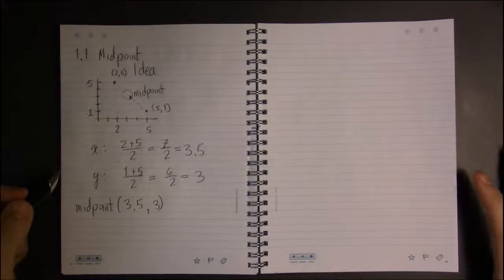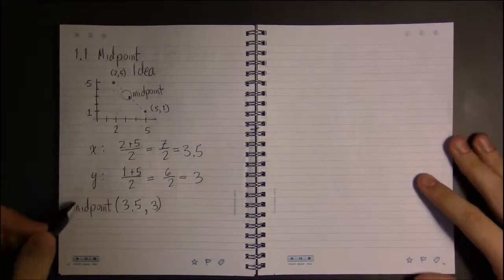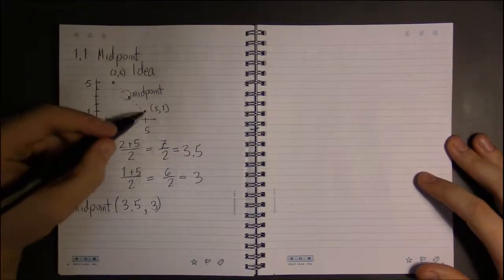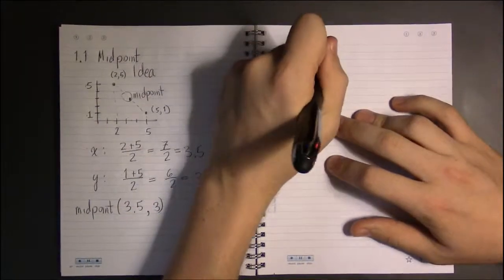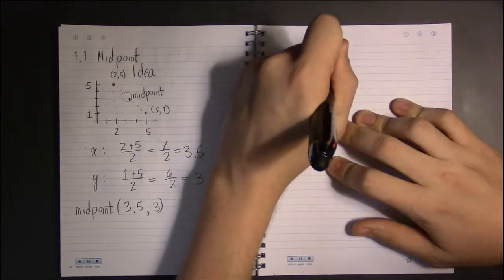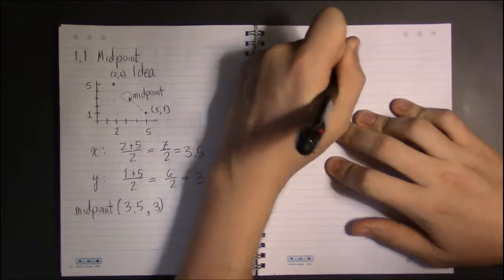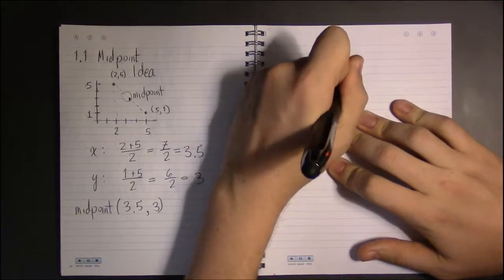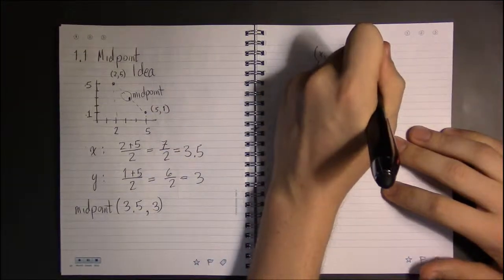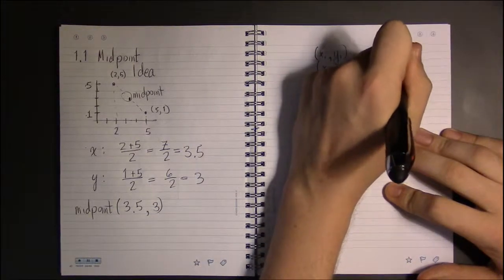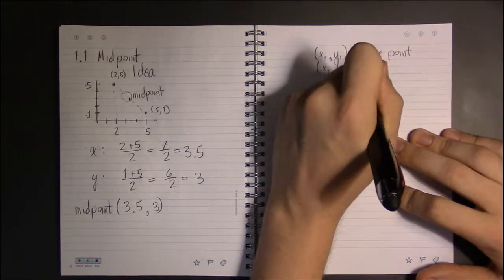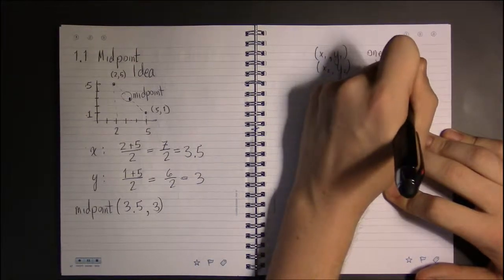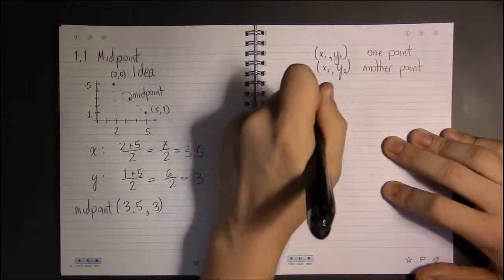So let's generalize this. What have we done? Well, we were given two points, so we'll stick with (x₁, y₁) and (x₂, y₂) - one point and another point. So we've got two points here. The midpoint